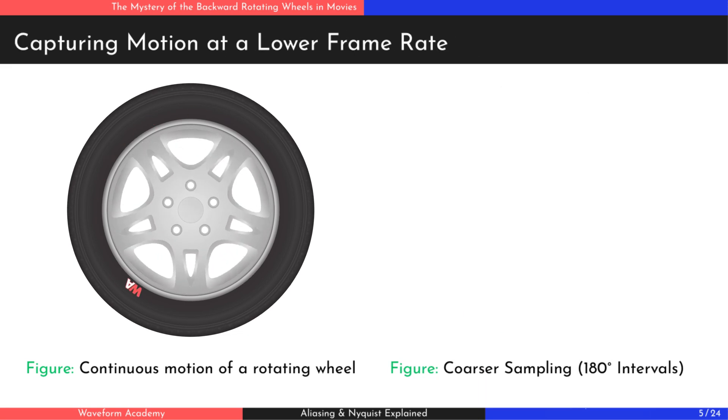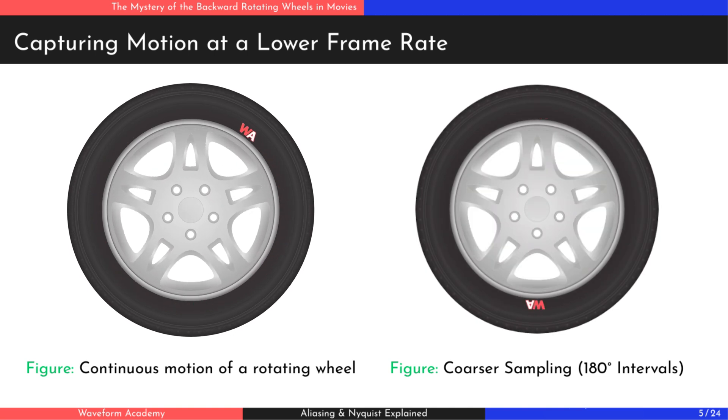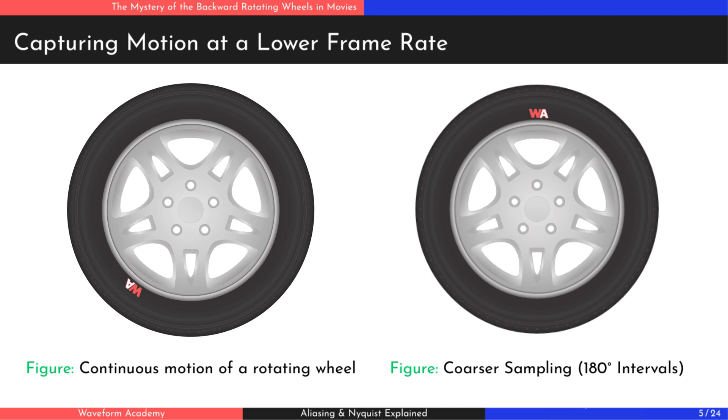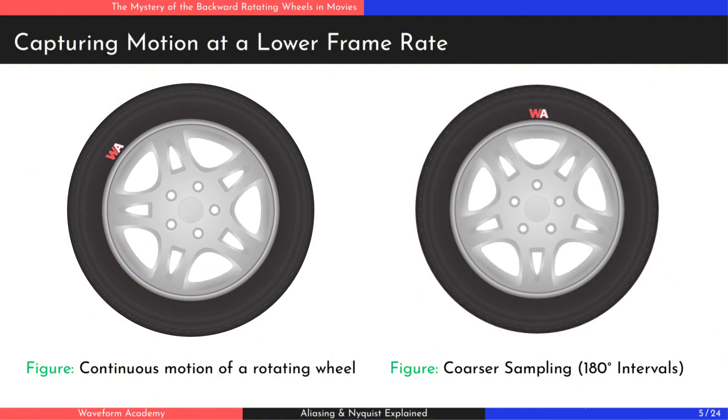Now, let's reduce the sampling rate by taking images every 180 degrees. As you can see, the motion becomes even more choppy, and it's harder to tell the direction the wheel is rotating. The less frequent sampling makes it difficult for our brain to track the wheel's movement accurately.